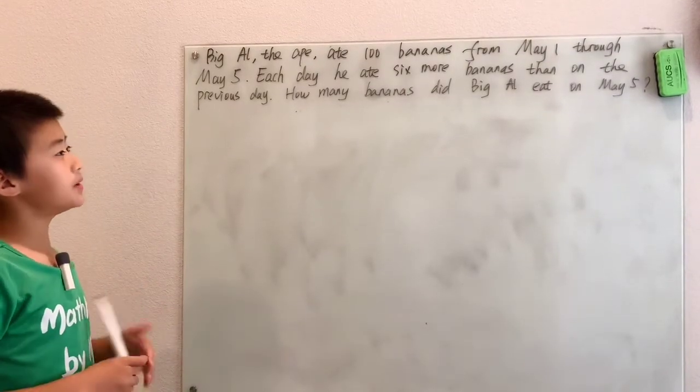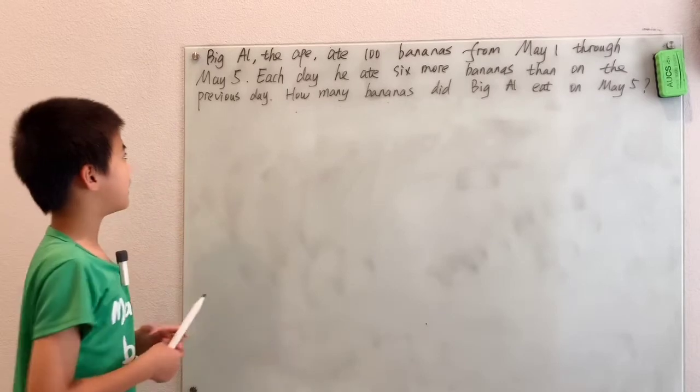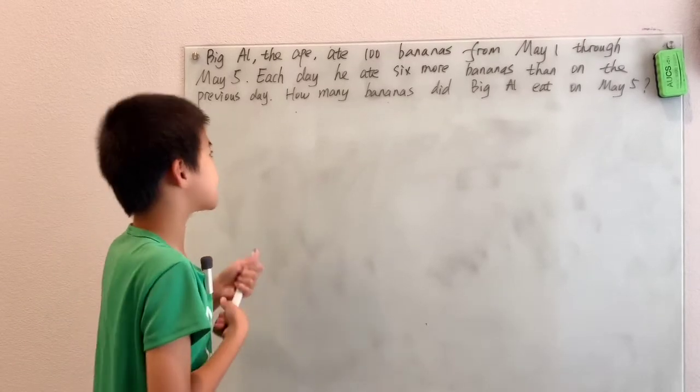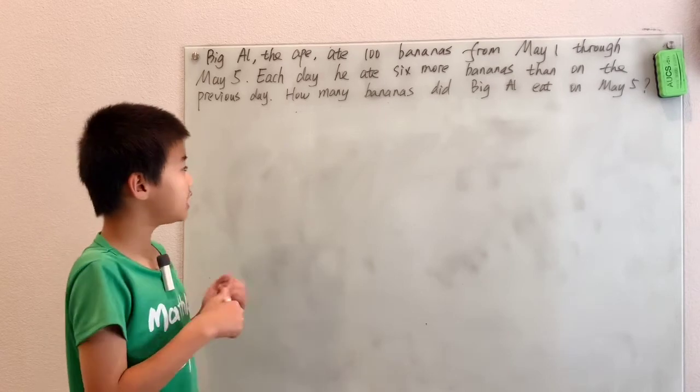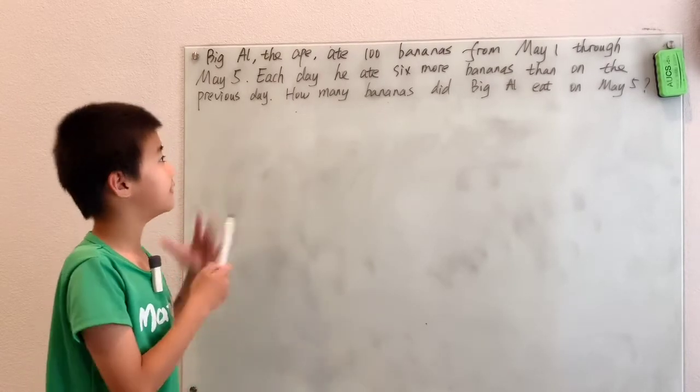Big Al the ape ate 100 bananas from May 1st through May 5th. Each day he ate 6 more bananas than on the previous day. How many bananas did Big Al eat on May 5th?